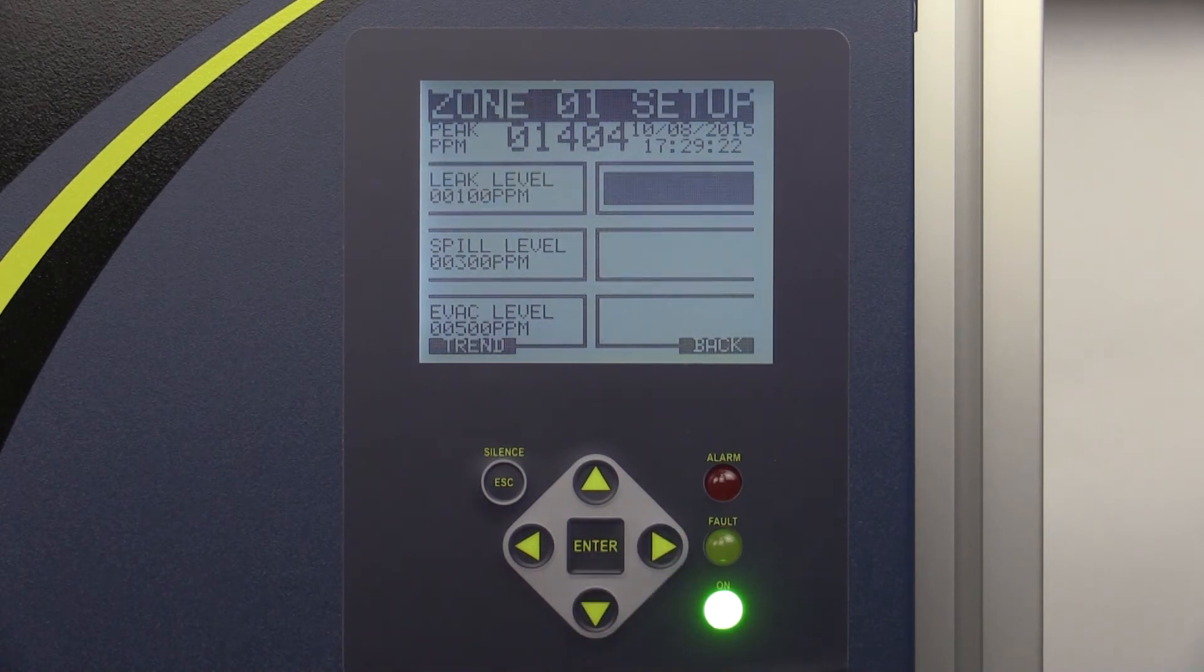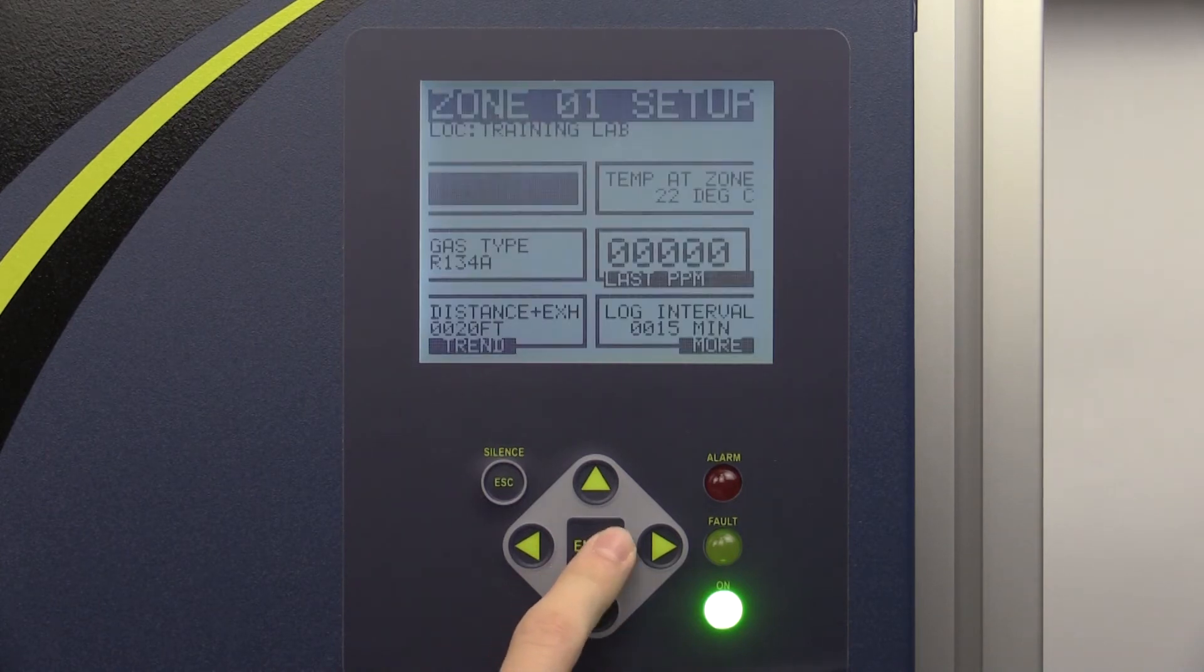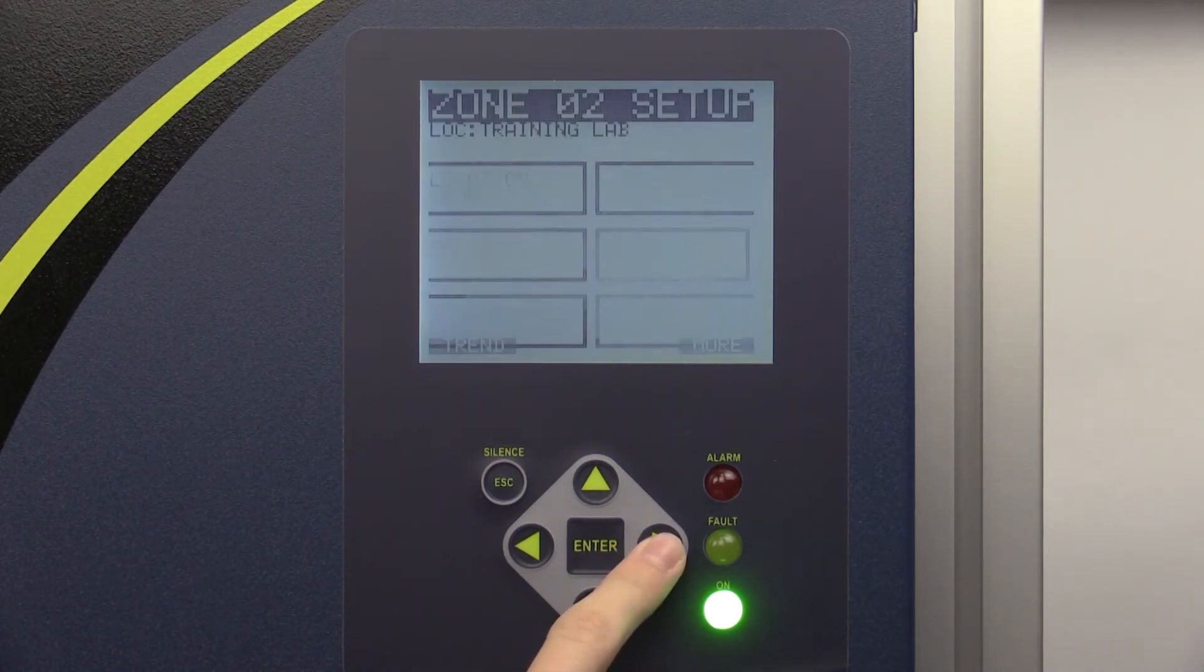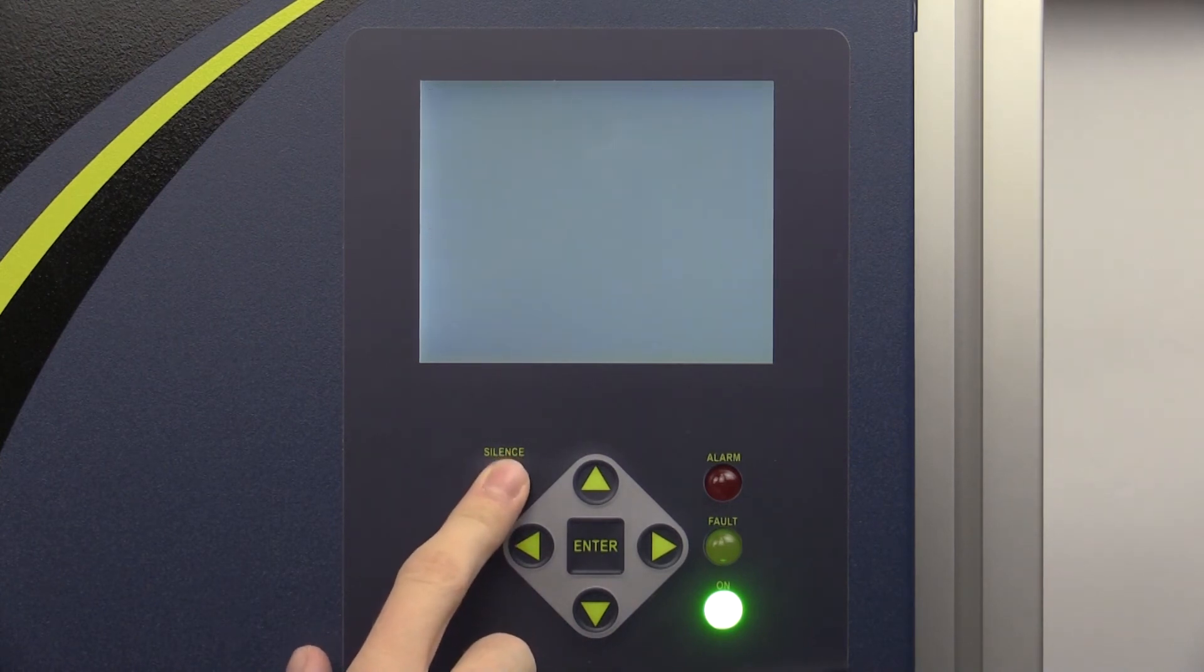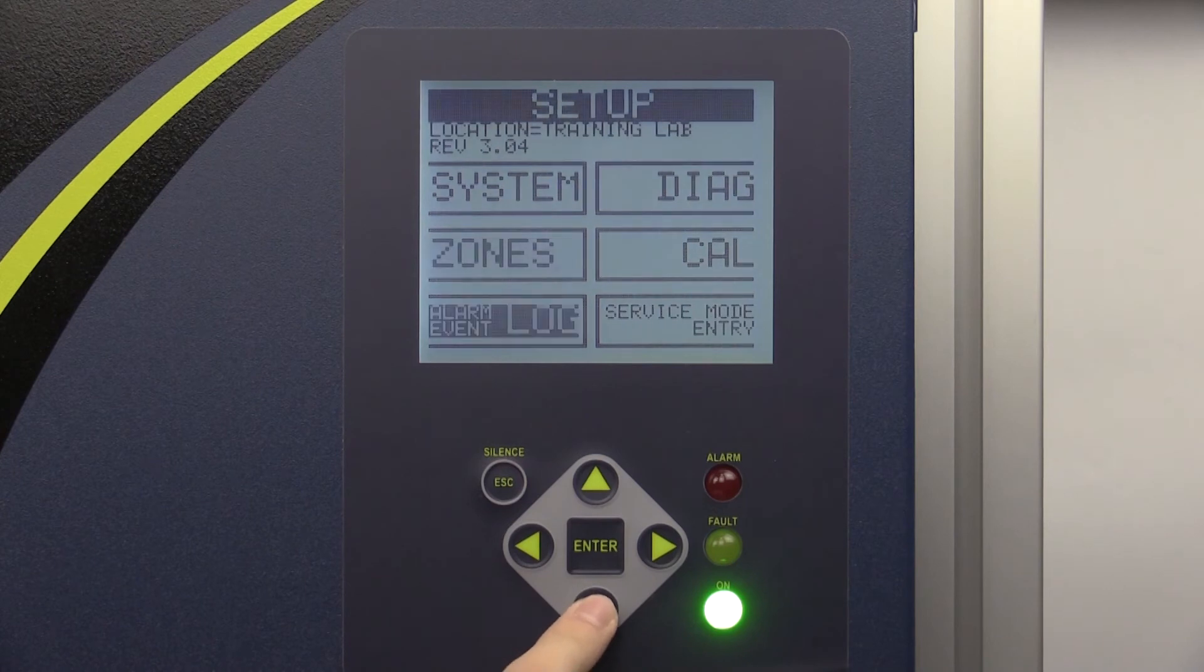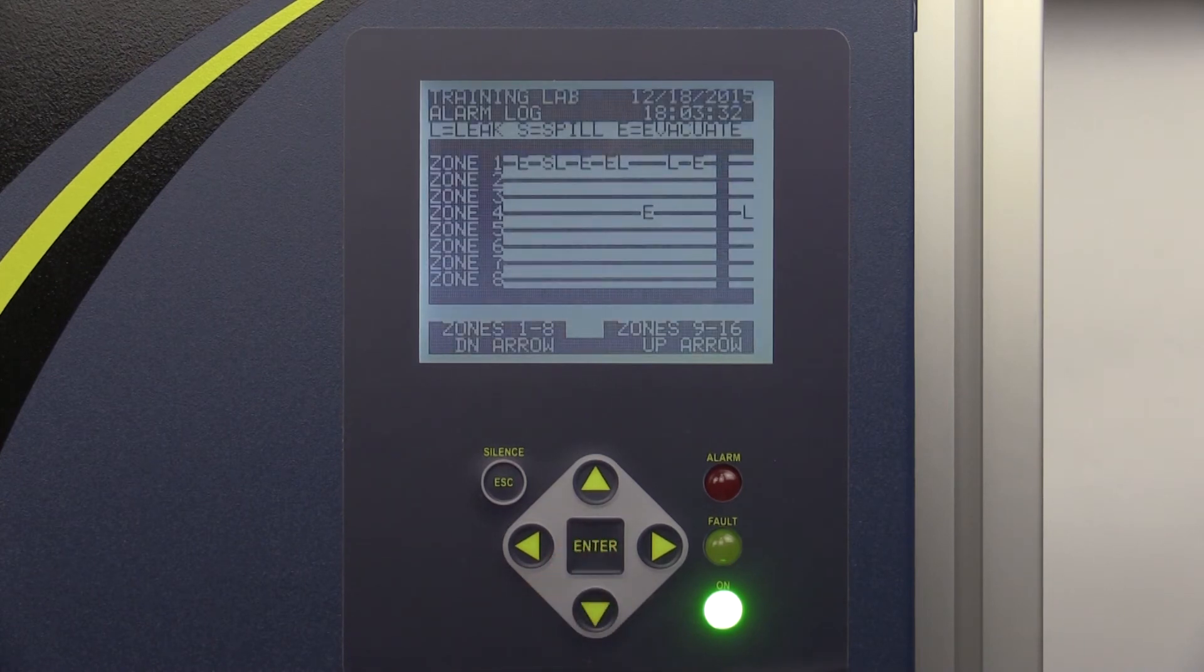Use the Press to Reset Peak button to reset the peak PPM value displayed at the top of this screen. Use the right arrow key on the keypad to advance to the next zone, and the left arrow key to go back to the previous zone. From the first setup screen, you can access the alarm event log. This page will display a log of all of the alarm events that have occurred at each zone for the past 100 log entries.